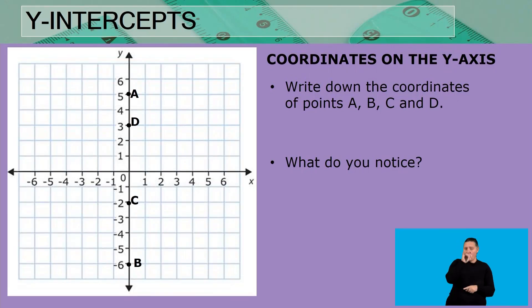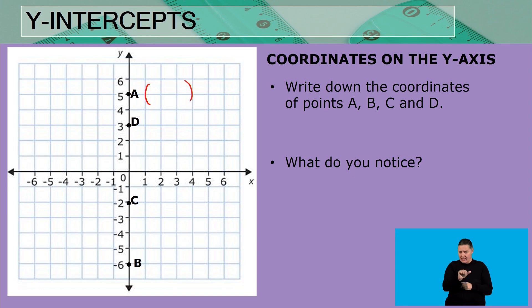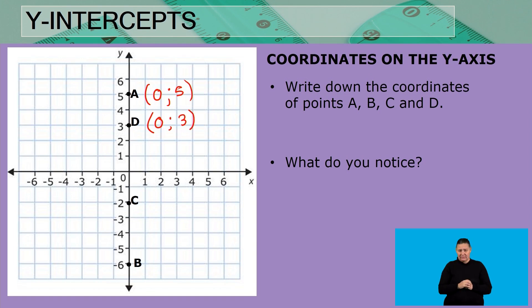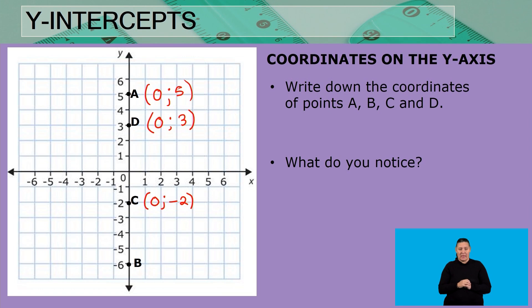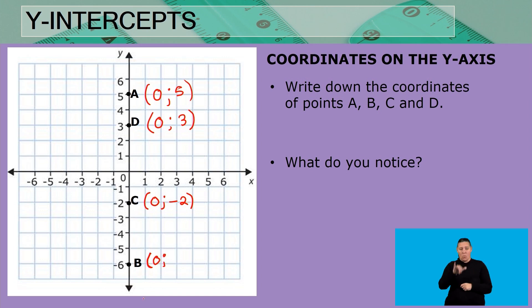Let's look at the y-intercept first. We are going to be looking at coordinates on the y-axis. Write down the coordinates of points A, B, C, and D. Point A has an x value of zero and a y value of five. Point D has x at zero and y at three. Point C has zero as the x value and y as negative two. Point B has zero as the x value and negative six as the y value.